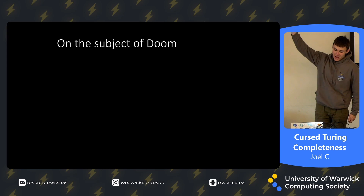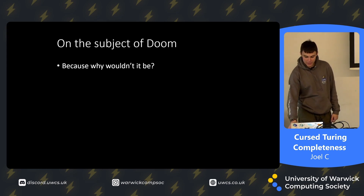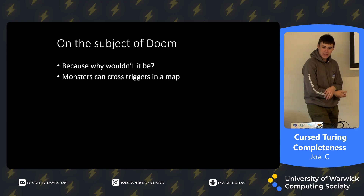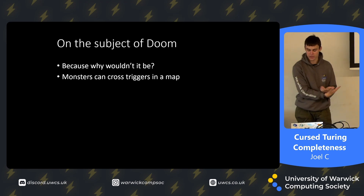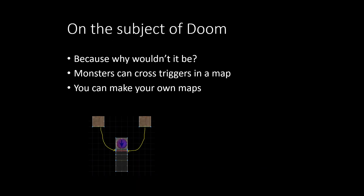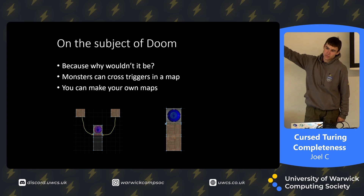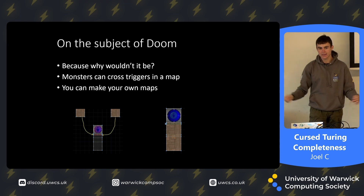On the subject of DOOM — DOOM itself is Turing complete, because why wouldn't it be? It's Turing complete through monsters and triggers. Triggers can cause various changes in the map, and monsters can trigger triggers. Because you can make your own maps, you can abuse this. That image shows a NAND gate: if a monster goes into each of the two blocks at the top, they open the two doors at the bottom, forming a NAND gate. There's also a NOT gate using a trench — combined with NAND, Turing complete.